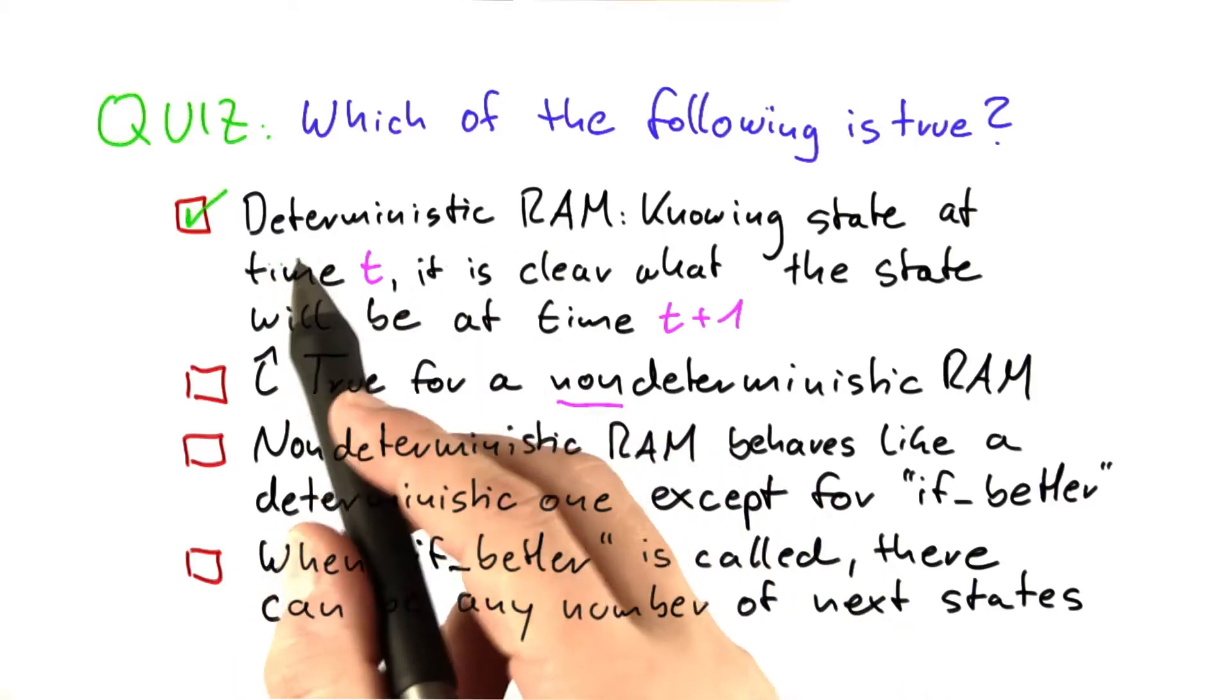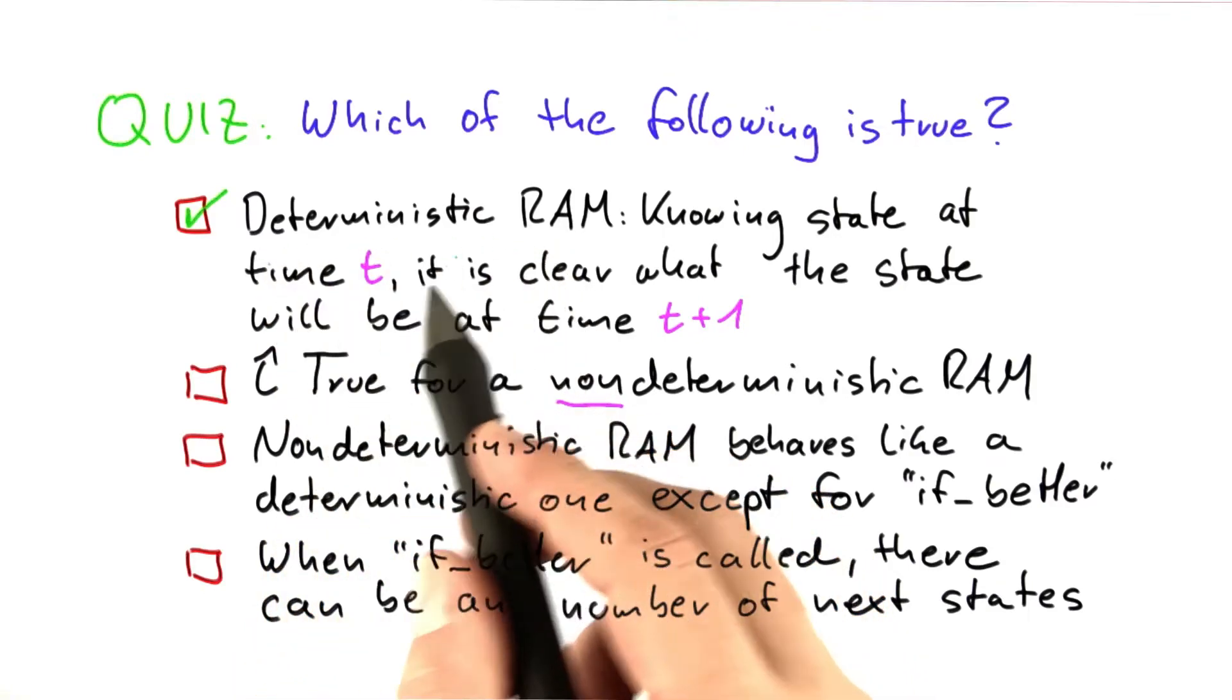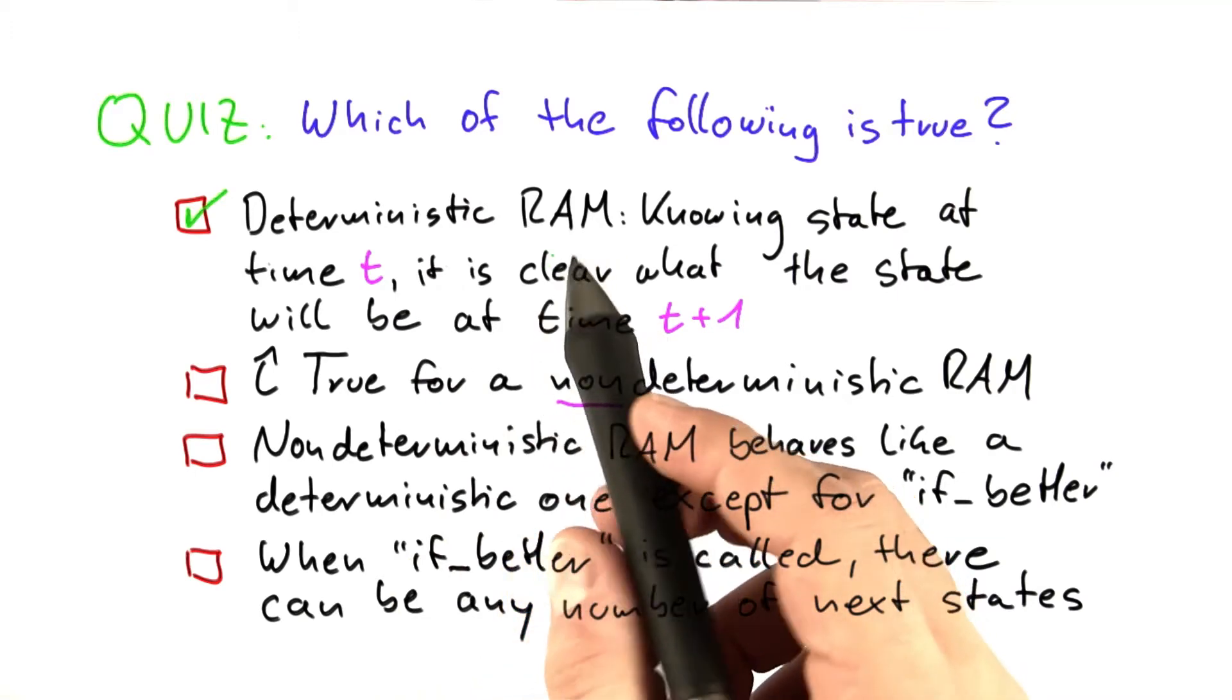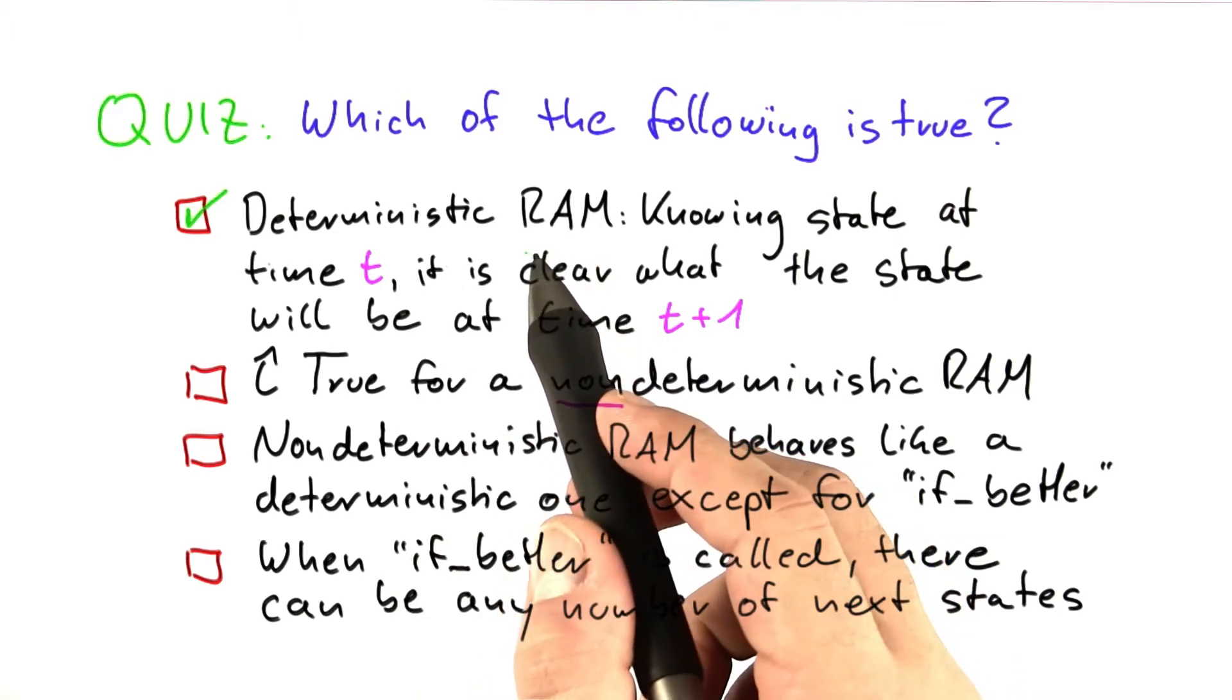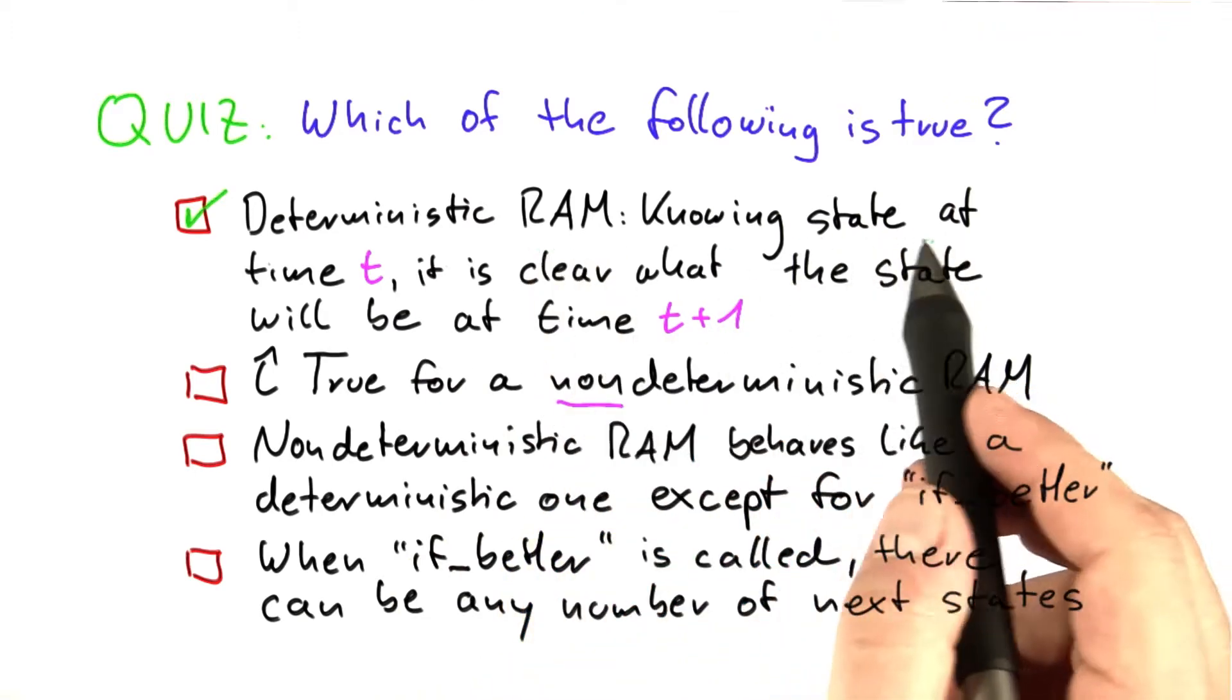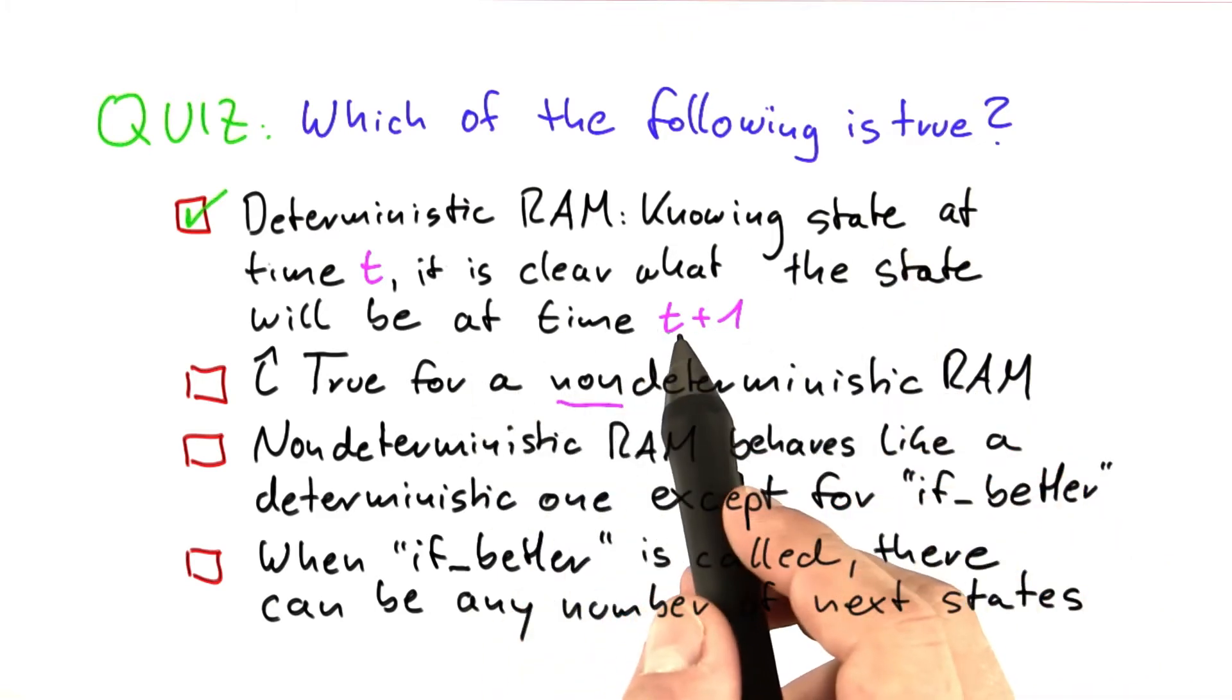So the first statement is clearly true and we have talked about this a couple of times in this unit. If you know the state of the deterministic RAM, that means you know what's in the memory and where the program is currently executing, then you can easily tell what the machine will do as a next step.